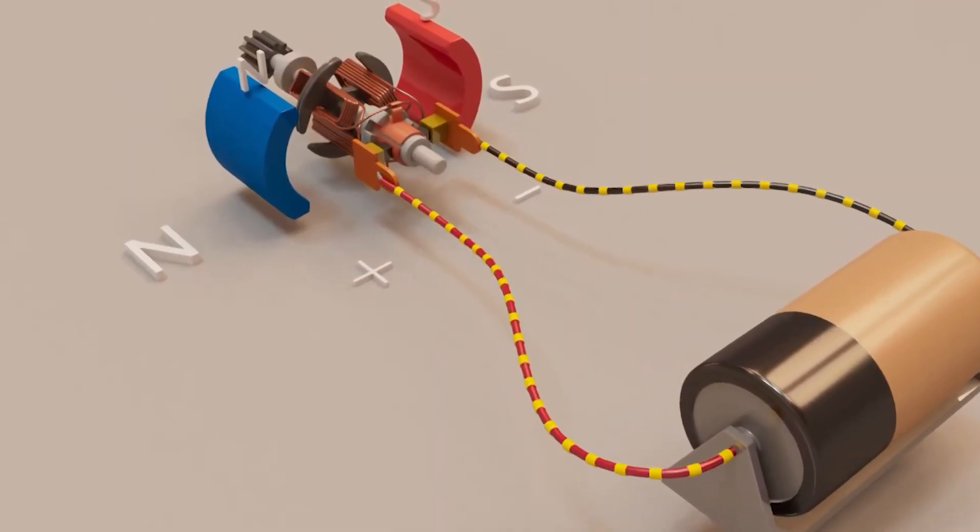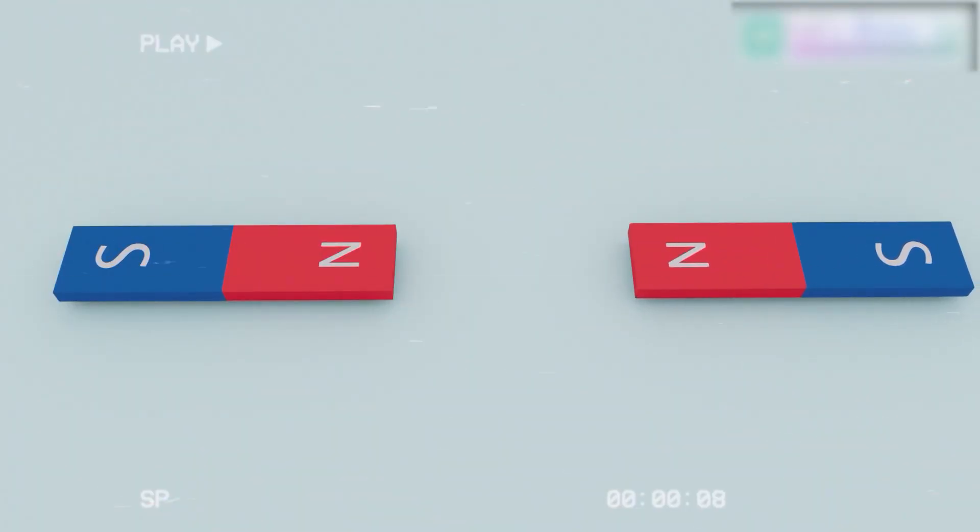But motors demand more than permanent magnets. They need control, and that control is found in electromagnets.